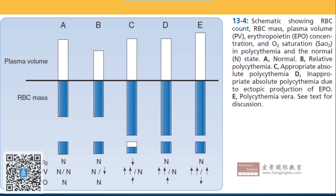Panel D represents Inappropriate Absolute Polycythemia due to ectopic production of EPO. EPO is mainly synthesized and released by the juxtaglomerular cells of the kidney in response to anemia. However, if the EPO is produced from an ectopic location — not the kidney — then we call this Inappropriate Absolute Polycythemia. The RBC count is truly elevated, but not due to normal bone marrow response.